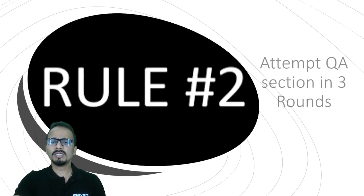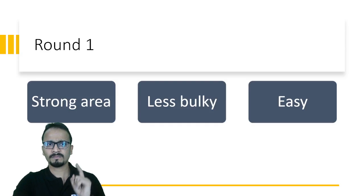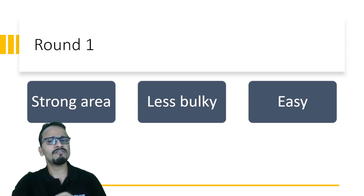Rule number two: attempt QA section in three rounds. In round one, attempt all the questions which are your strong areas, which are less bulky and which are easy to finish.